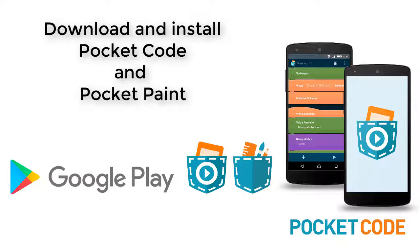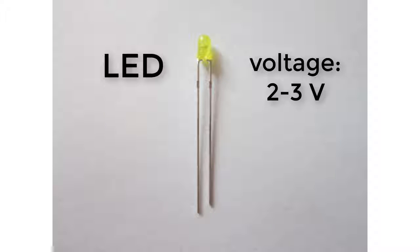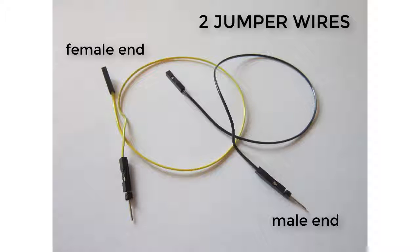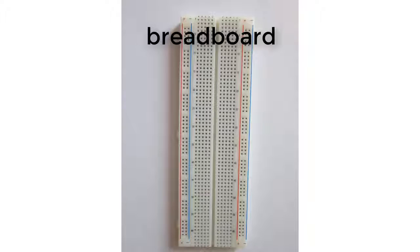For the electrical circuit you need an LED with a maximum voltage of 2 or 3 volts, a 330 ohm resistor, and two jumper wires. Each of them should have one female and one male end. I'm using a breadboard where I can build the circuit.